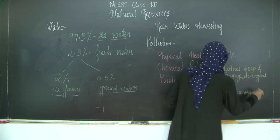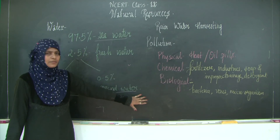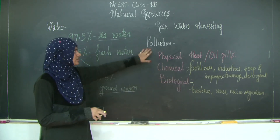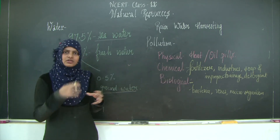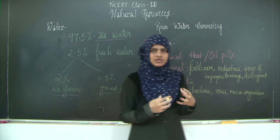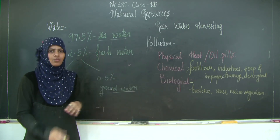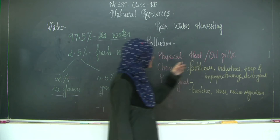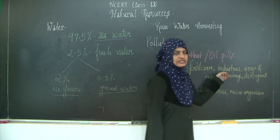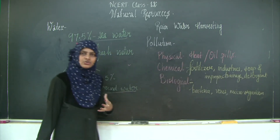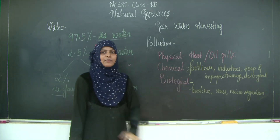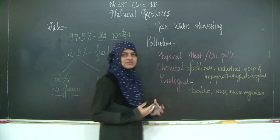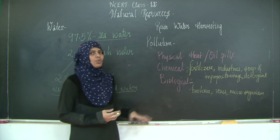Biological agents such as bacteria, viruses, and microorganisms also cause water pollution. These are generally present in improper drainage systems or sewage water. When sewage water mixes with an actual water resource, the bacteria and viruses present in the fecal matter of humans get mixed with the water, causing pollution. So there are three ways water gets polluted: physical (heat or oil spills), chemical (fertilizers, industrial untreated water, soaps and detergents, improper drainage/sewage), and biological (bacteria, viruses, microorganisms).